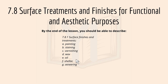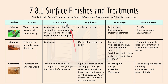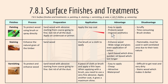We'll move on to the first one, 7.8.1 Surface Finishes and Treatment, and we'll start off with Painting. It's used to protect wood using brush or spray directly. To prepare it, you sand wood with abrasive, then apply the top coat with painting. Advantages include it's easy to apply, it protects wood, and it improves aesthetics. Disadvantages are it's scruffy, time consuming, and it covers a lot of the natural wood grain.